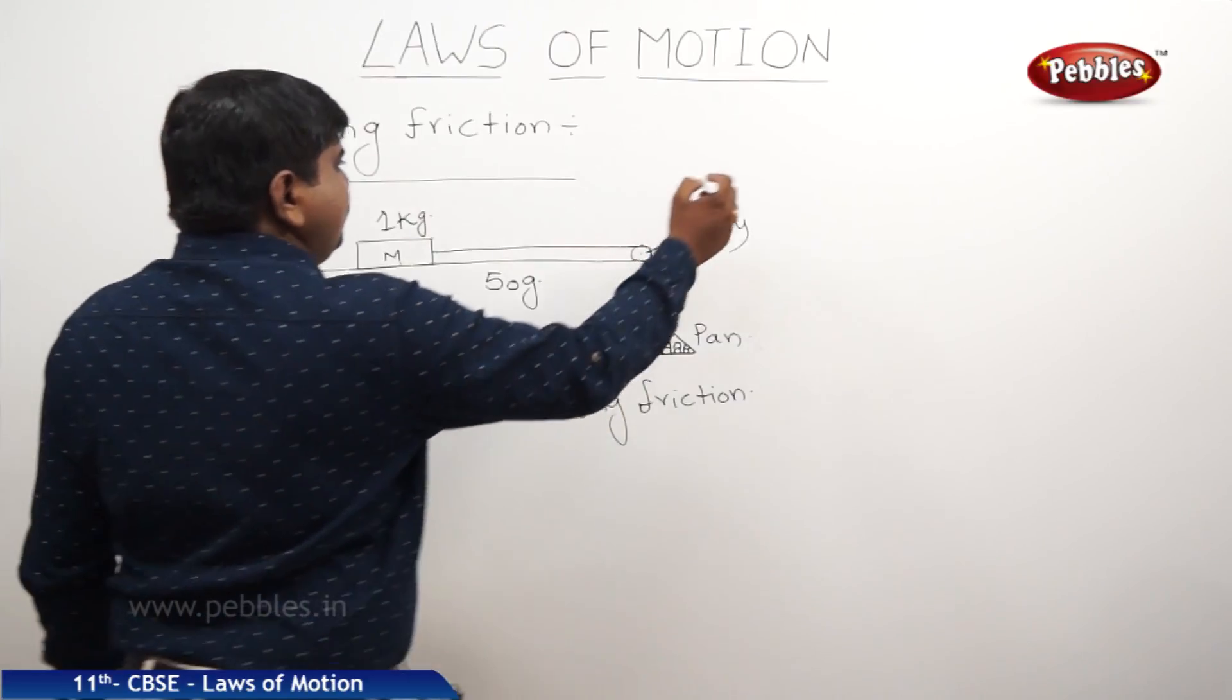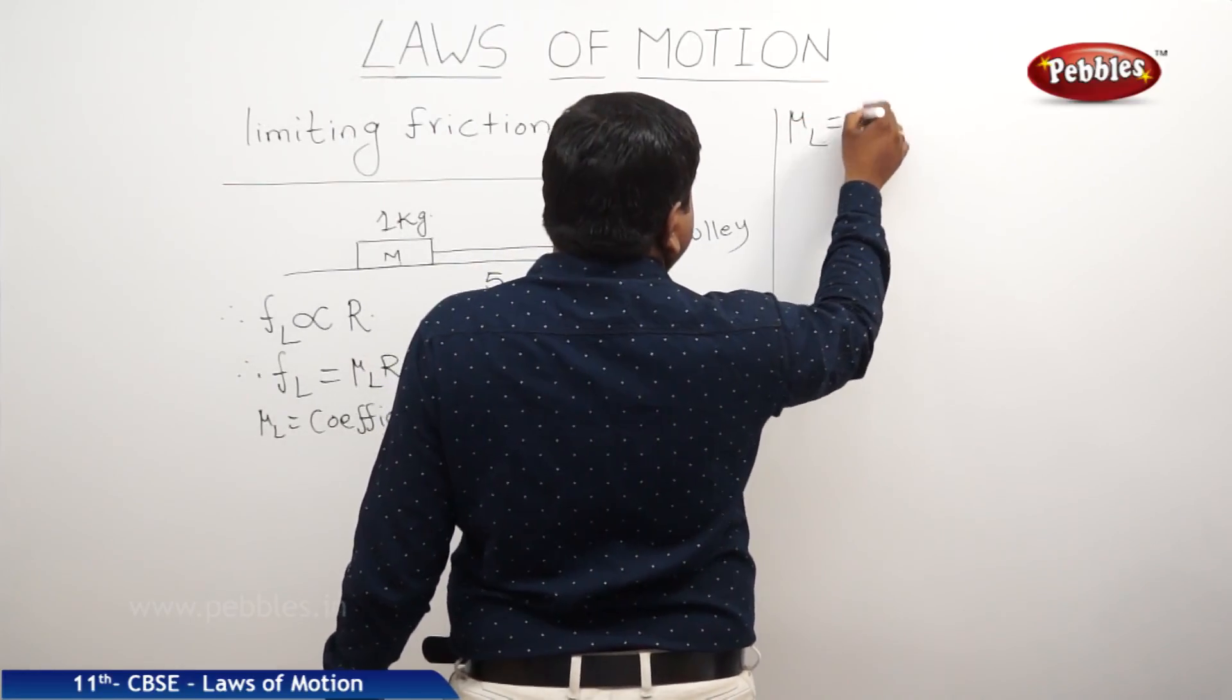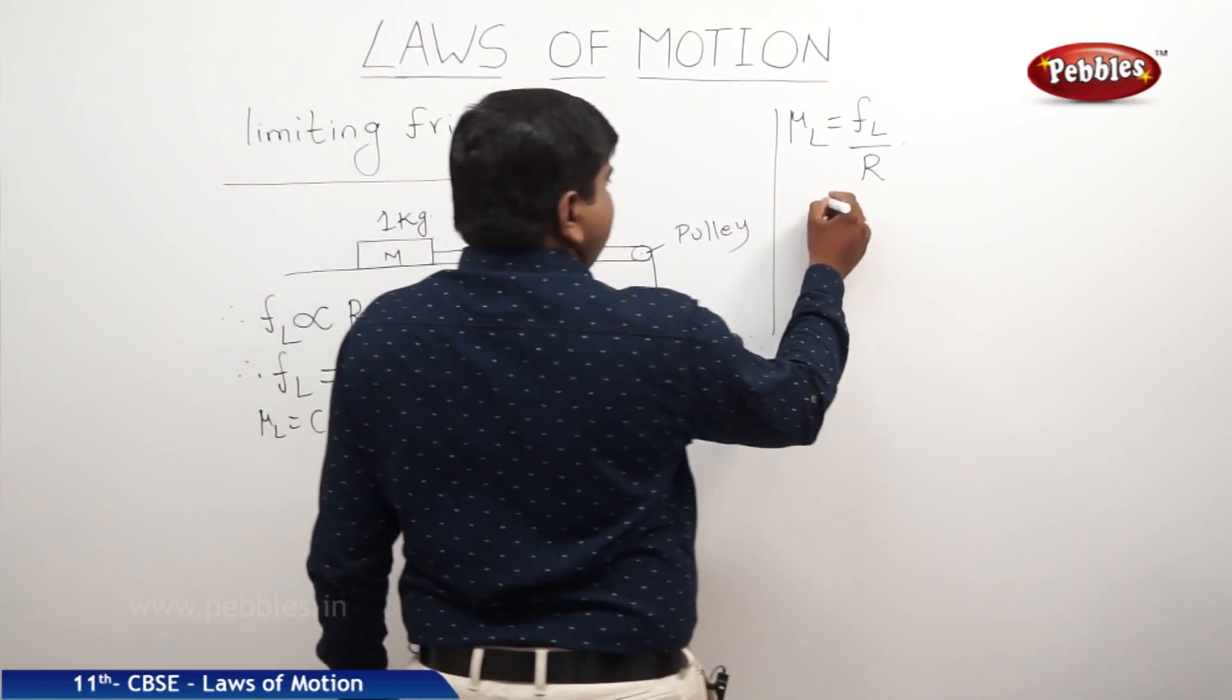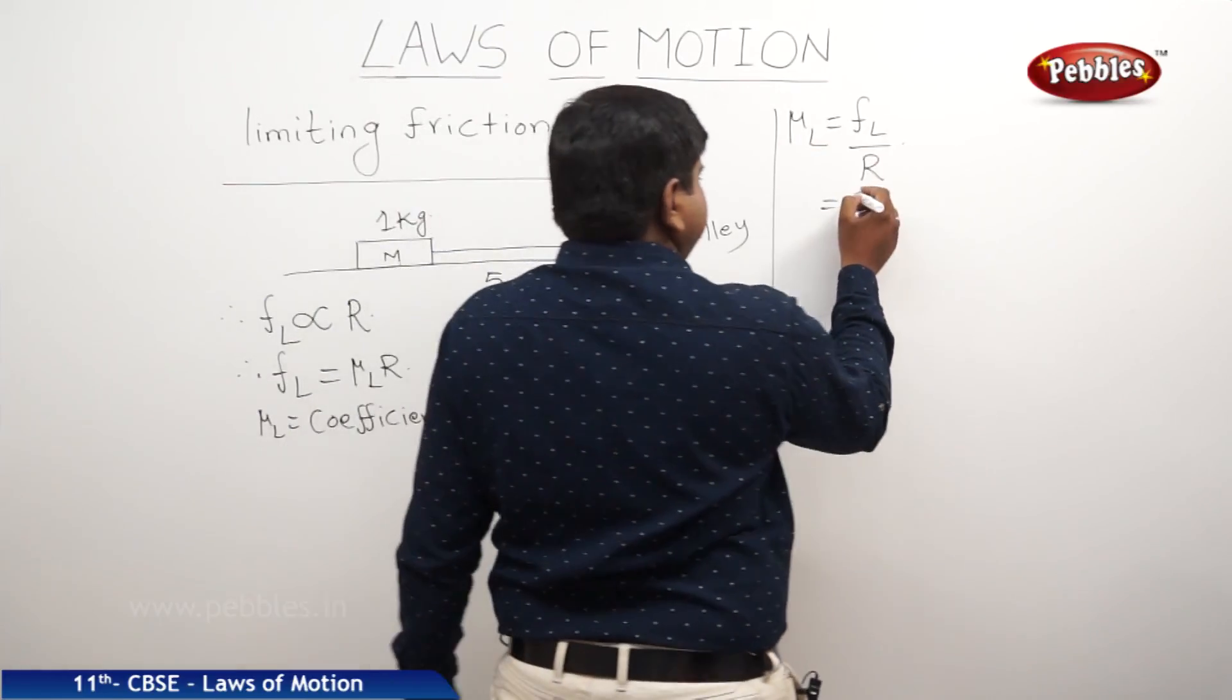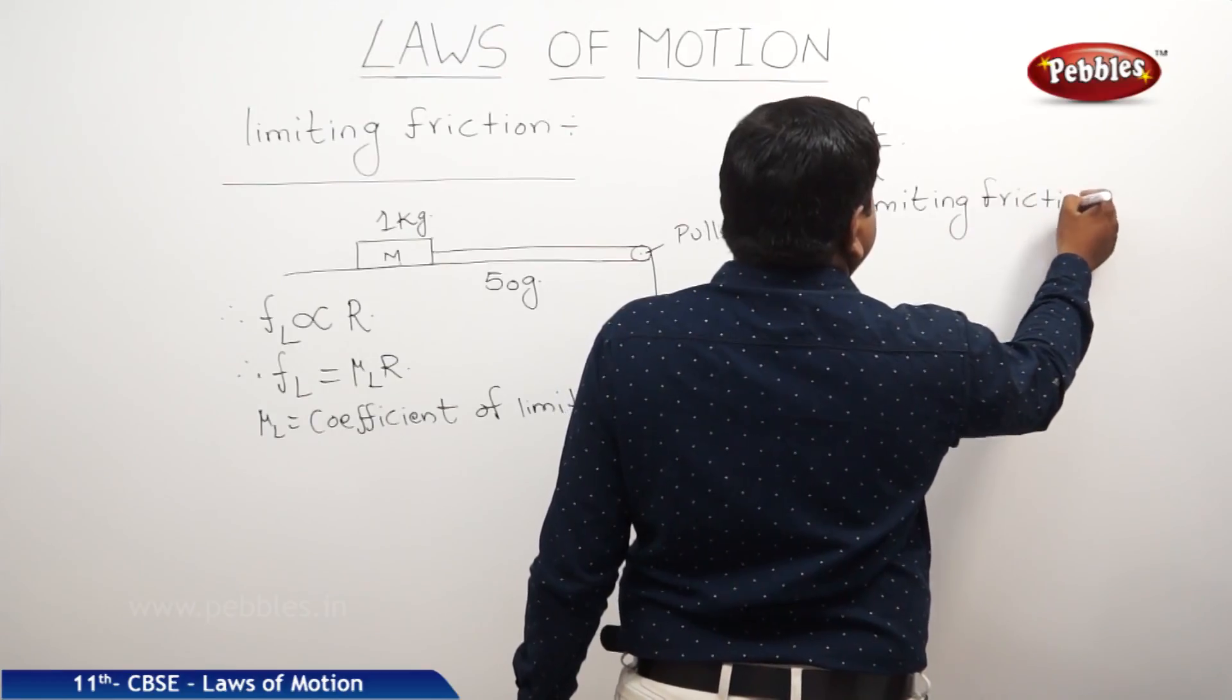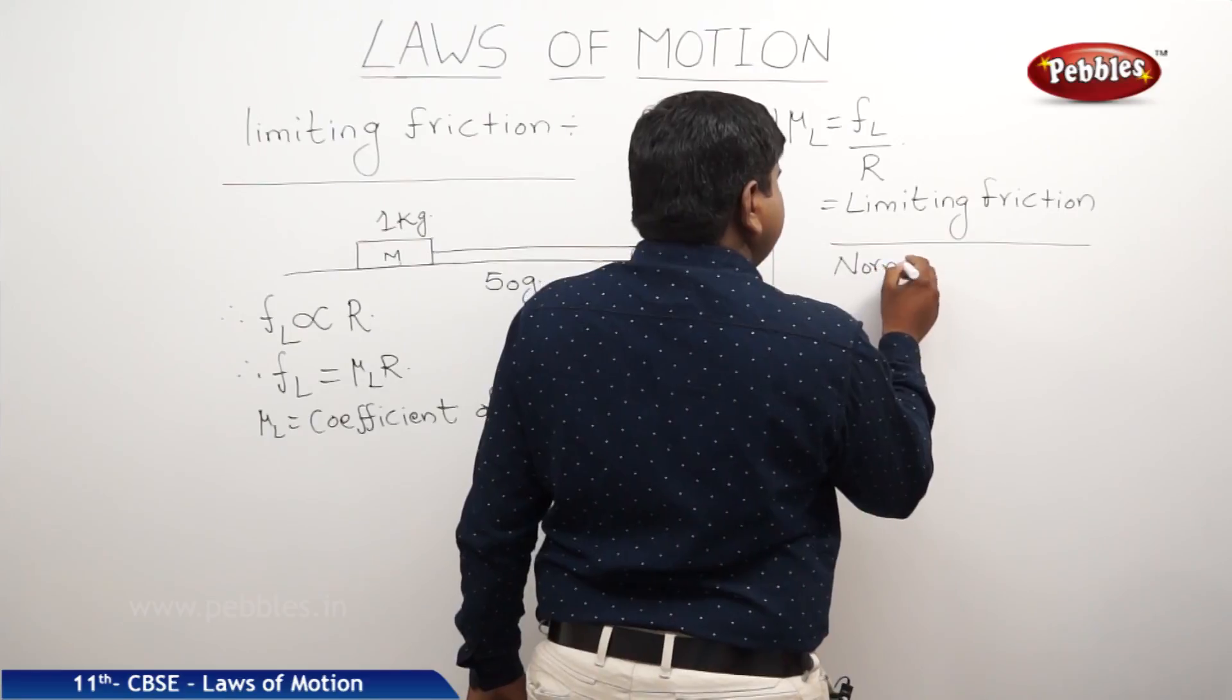So μL is defined as FL by R. Therefore, limiting friction coefficient is defined as limiting friction by normal force of reaction.